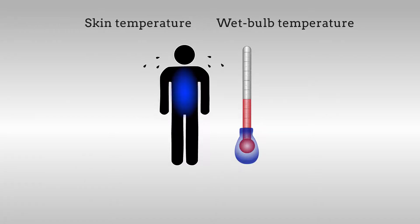Sweating helps us maintain a skin temperature equal to the wet bulb temperature, ideally below our core body temperature of about 37 degrees Celsius.